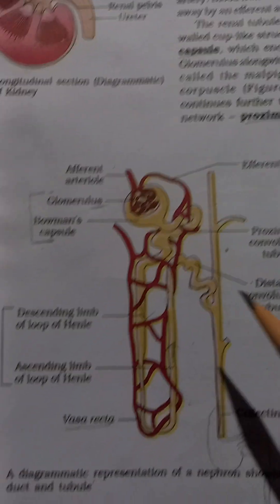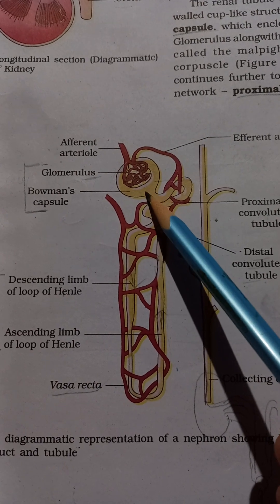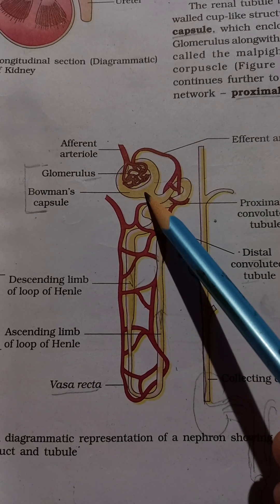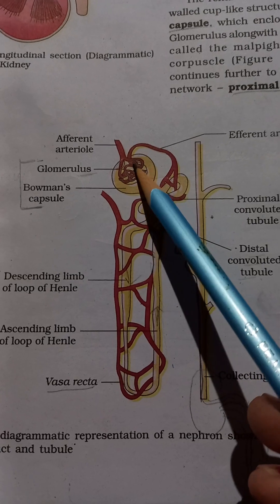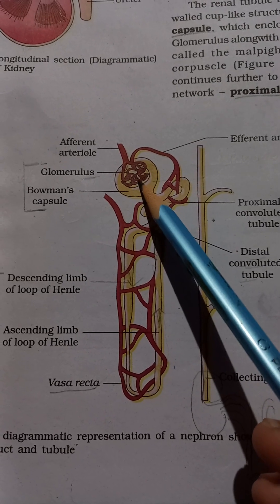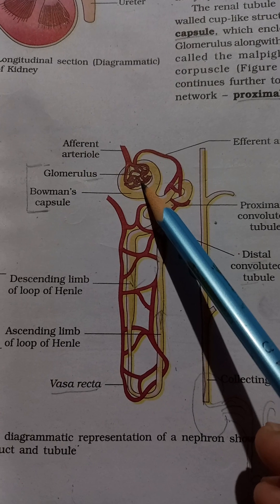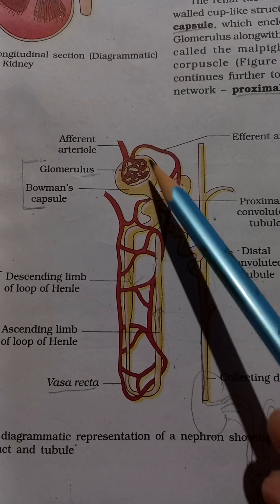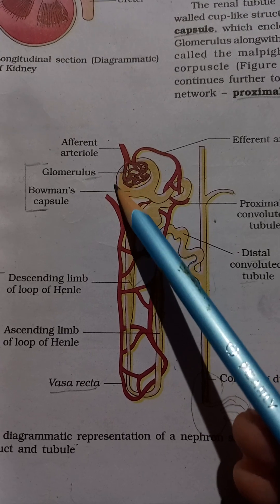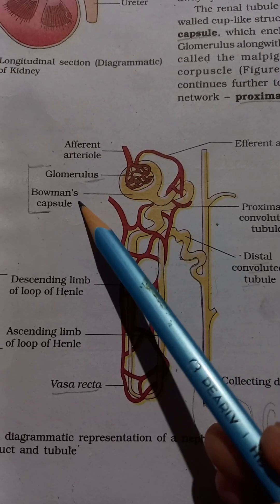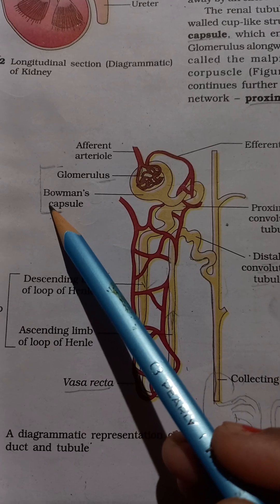Looking at the diagram of the nephron: the glomerulus is a bunch of blood capillaries, shown in red. It is enclosed in a cup-shaped structure called the Bowman's capsule. Together, the glomerulus and Bowman's capsule form the Malpighian corpuscle, which is the beginning of the nephron.